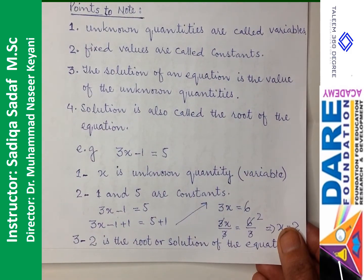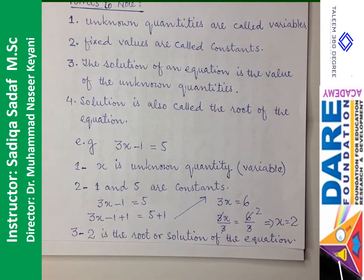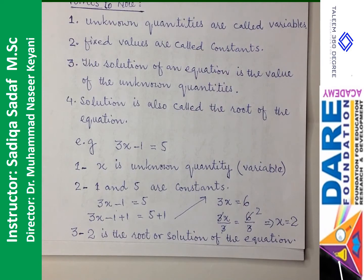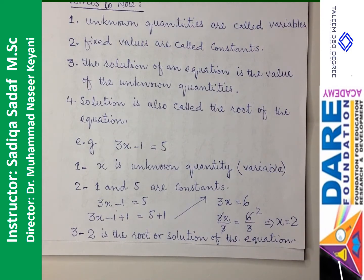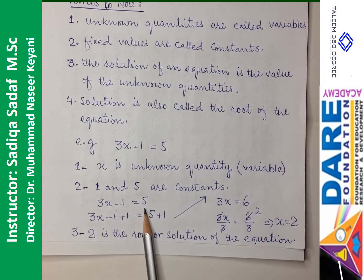Misal ke tor par — humne yahan example di hai: 3x minus 1 is equal to 5. Ismein pehli baat jo jaننے wali hai, woh yeh hai ke jo unknown quantity hai woh x hai, aur isliye hum ise variable bhi kehte hain. Doosri khas baat yeh hai ke 1 aur 5 yeh constant hain. Ab teesri cheez — humne iski value find karni hai, to jo value hogi woh equation solve karne ke baad hasil hogi. 3x minus 1 is equal to 5.